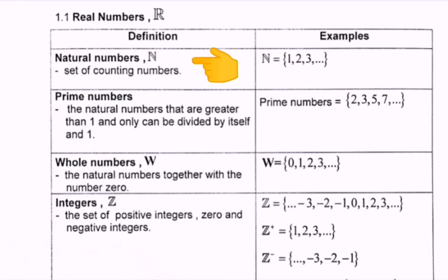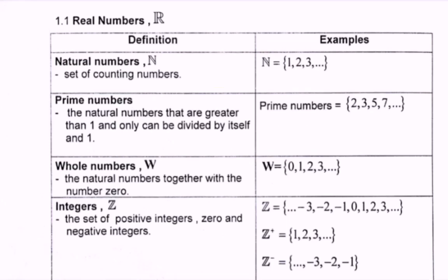So what is the natural number? It's a set of counting numbers. For example, we denote it as capital N, which starts from 1, 2, 3, and so on. So here we have the example.